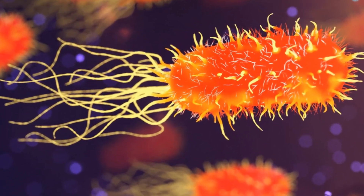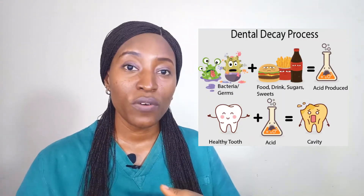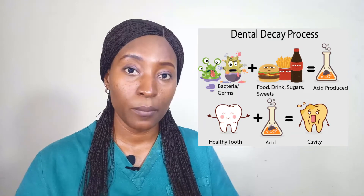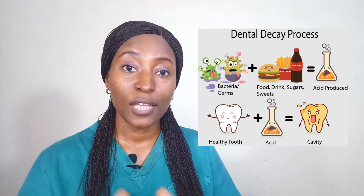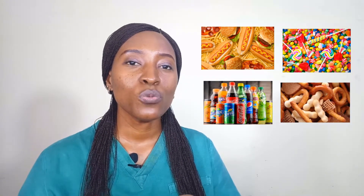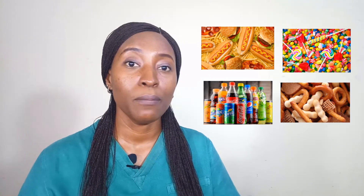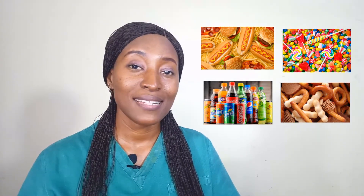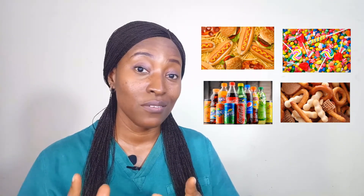When food particles are left on the surface of the teeth, the bacteria present in dental plaque tend to break them down. This results in the formation of an acidic byproduct, which over time tends to soften the tooth enamel. Eventually, the softened enamel gives way and a cavity is formed. Simple sugars, or refined carbohydrates, are the bacteria's main source of energy, so they break them down easily, producing acidic byproducts. Therefore, a diet high in simple sugars is a risk factor.